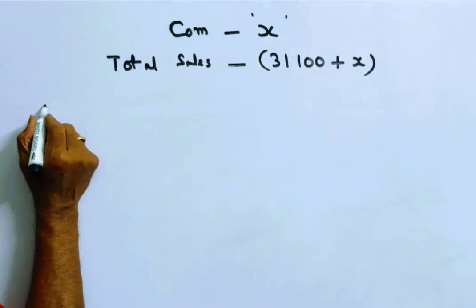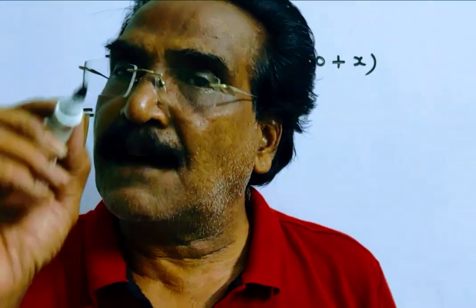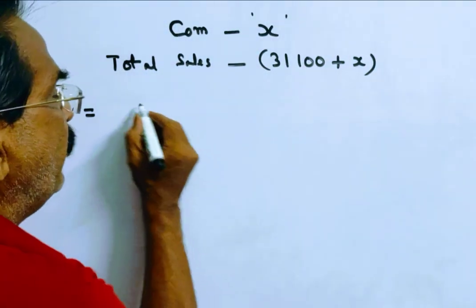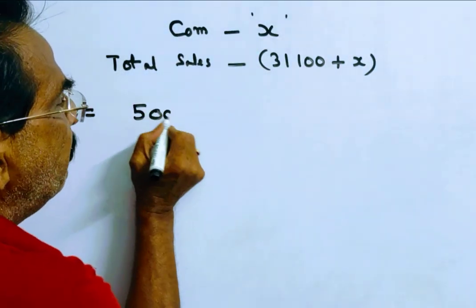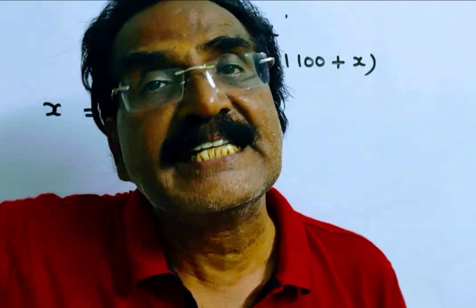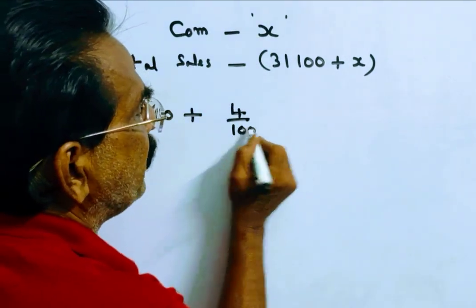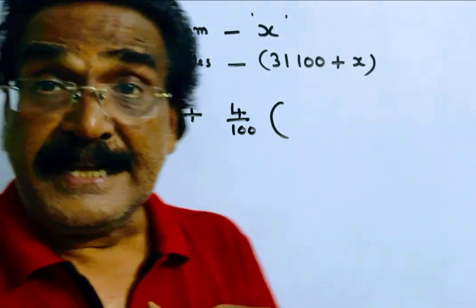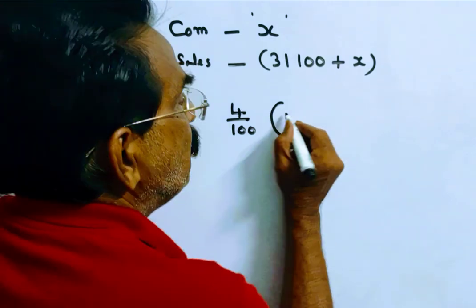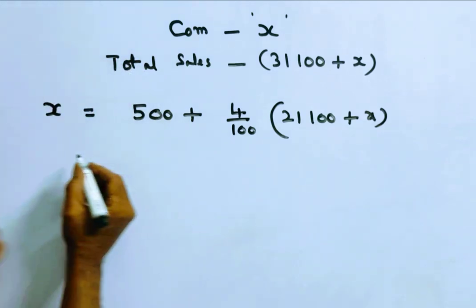Now his commission is 5% on all sales up to 10,000. 5% of 10,000 means 500 plus 4% commission on all sales exceeding 10,000. That is 31,100 minus 10,000, so 21,100 plus X.